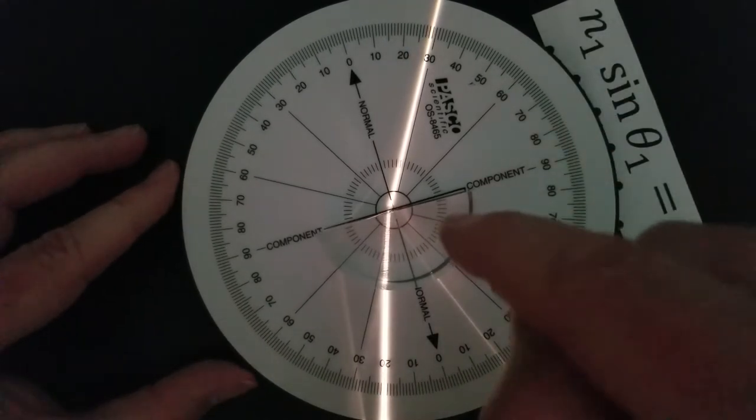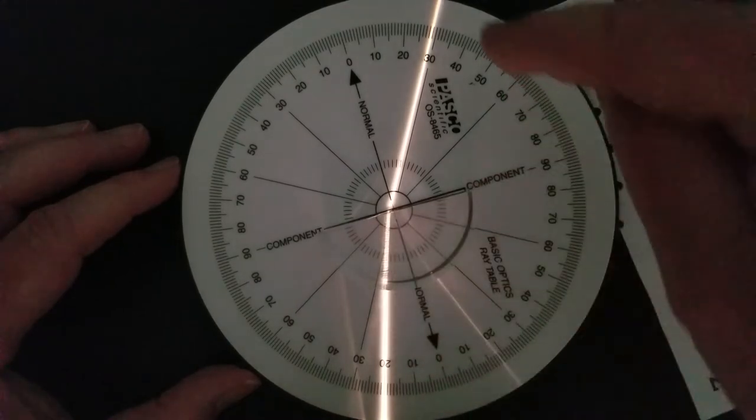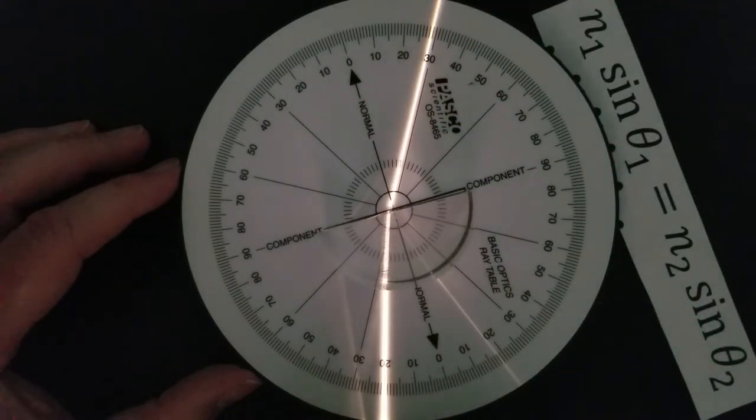Take your measurements. Determine the index of refraction of our solid. At 20 degrees inside the material, the angle outside in the air is about 28 and a half.